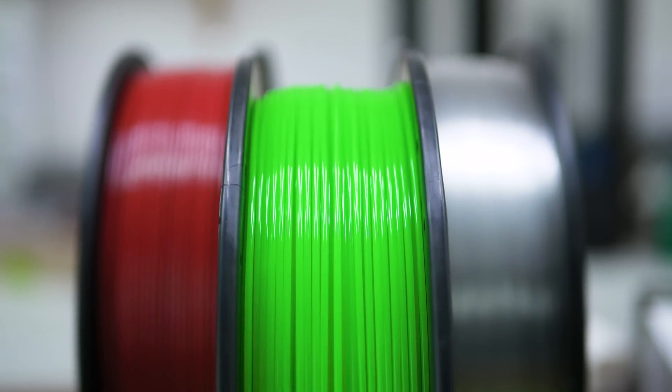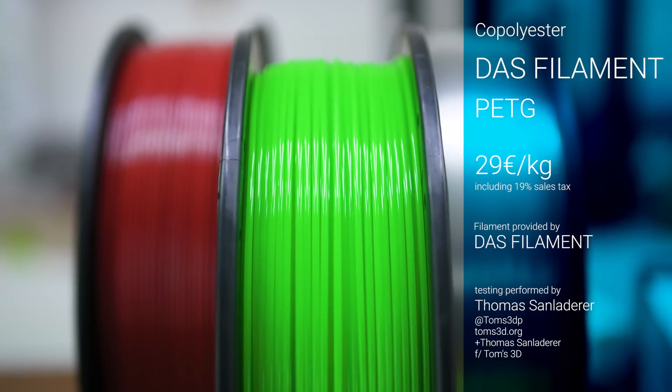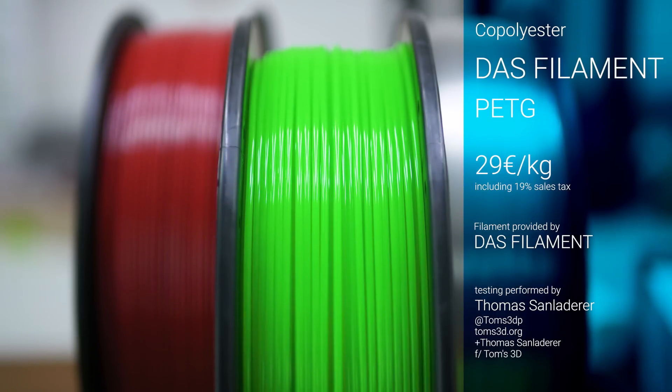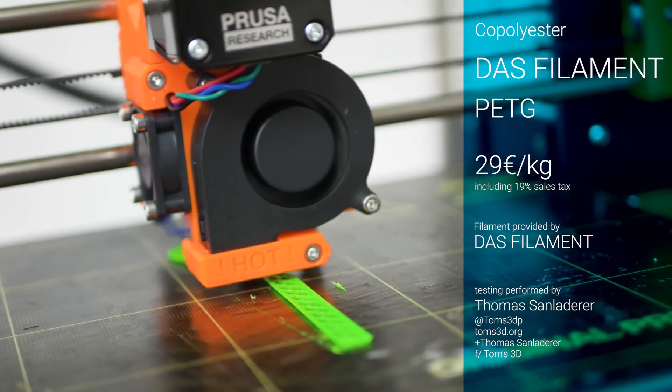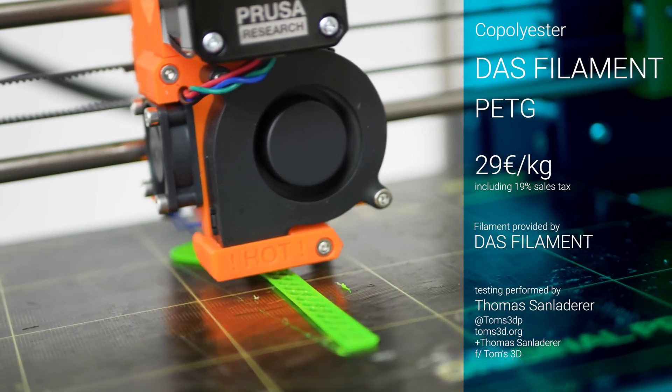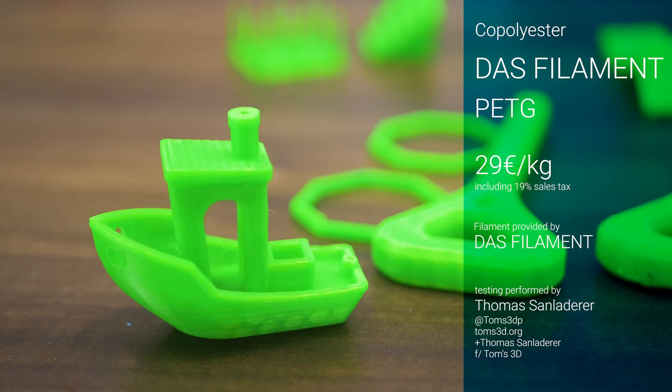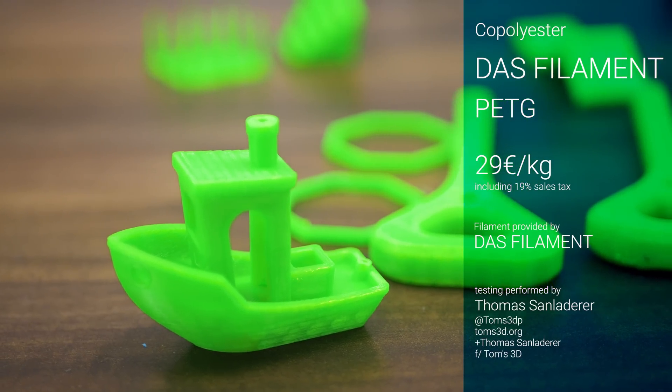Dustfilament PETG, a Made in Germany copolyester tested here in the bright green version. No matter what color you pick, they all cost 29 euros per kilogram and can be printed onto, for example, a glue stick covered heated bed set to 75 degrees Celsius and the nozzle at 230.